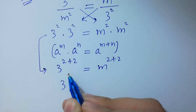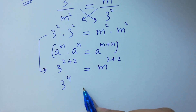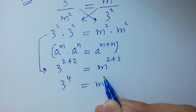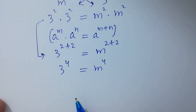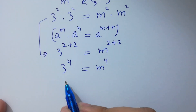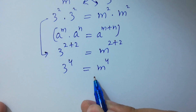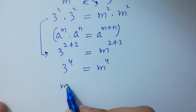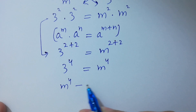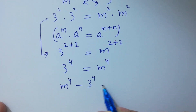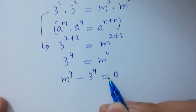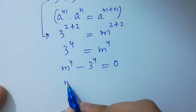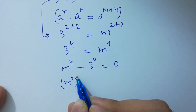So 2 plus 2 equals 4, giving us 3 to the power 4 equals m to the power 4. This can be rewritten as m to the power 4 minus 3 to the power 4 equals 0.